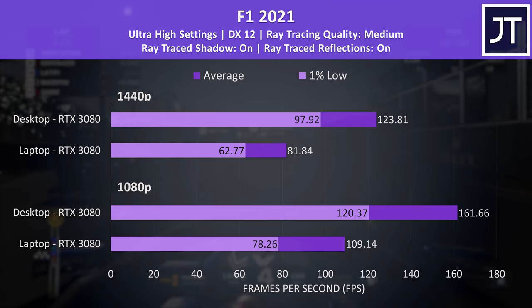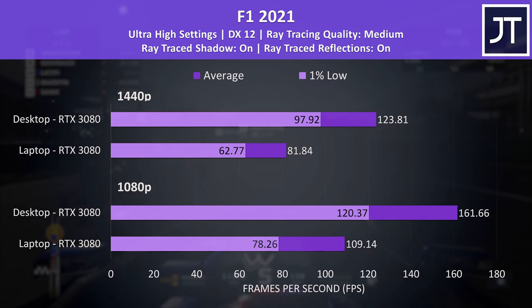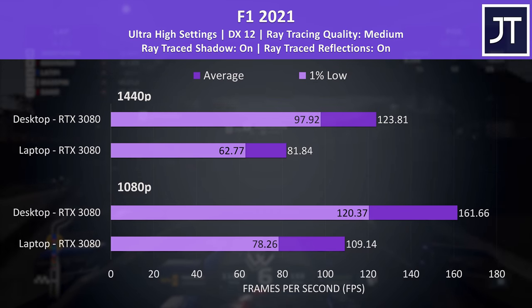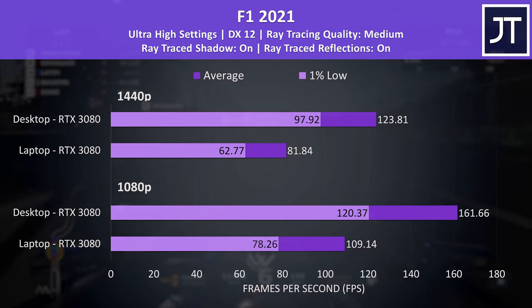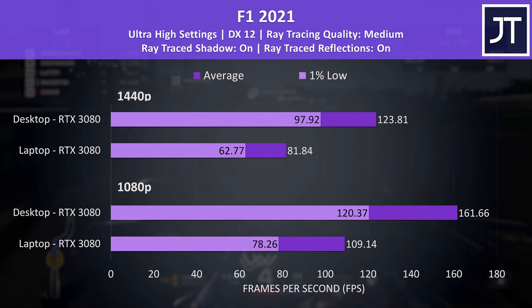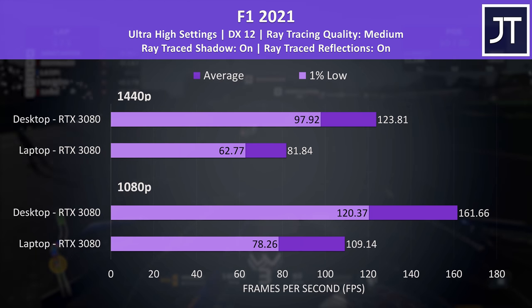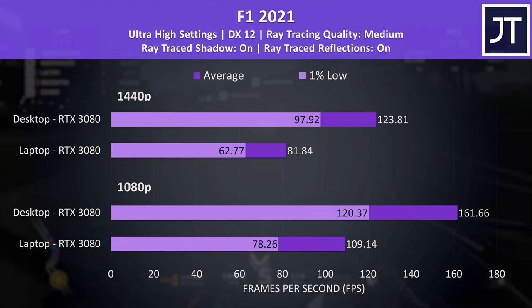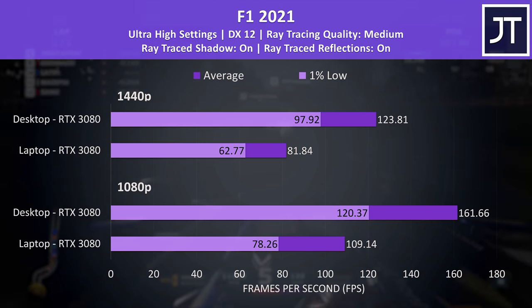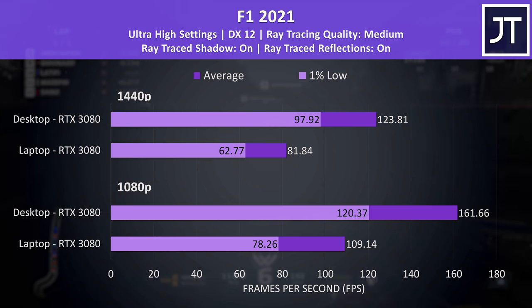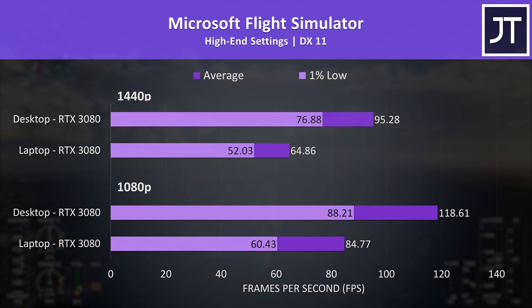F1 2021 was also tested with some ray tracing, because the maximum ultra high setting preset enables some of these by default, as listed at the top of the graph. This one also had above average gains for the desktop 3080 with the game's benchmark.